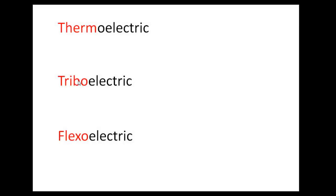The next one is the triboelectric effect. The prefix tribo means friction — you may be familiar with tribology, which is another field of science. The triboelectric effect refers to the direct generation of electricity when two in-contact surfaces are separated from each other. A classical example is the electrically charged plastic comb when you rub it on your hair. The spark which appears when you move on your carpet is another result of this effect.